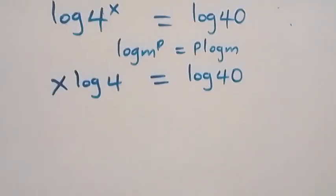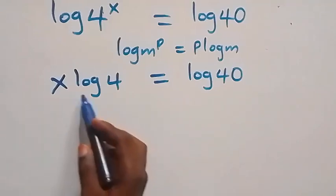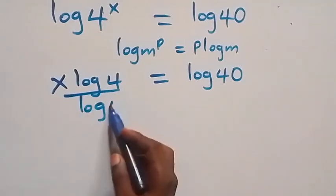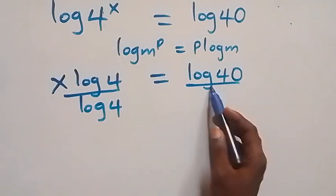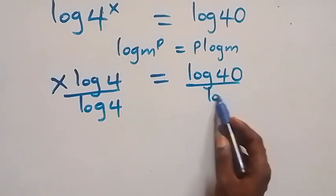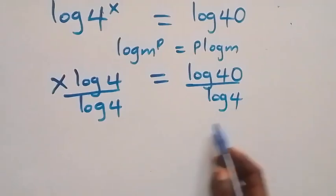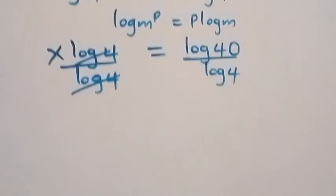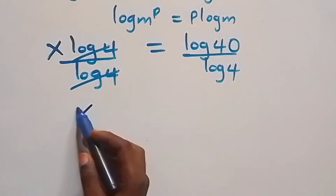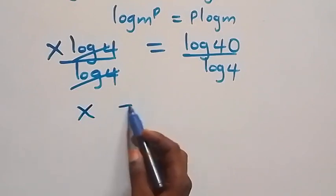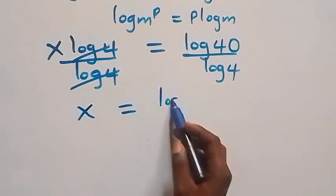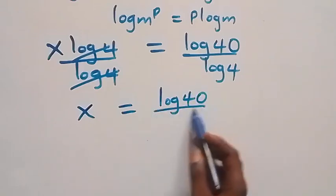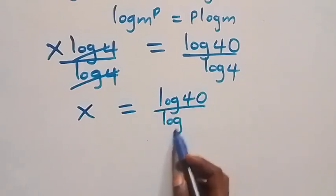The next step: we divide both sides by log 4. We divide this side by log 4 and also divide the other side by log 4, so log 4 cancels, and we have x equals log 40 over log 4.